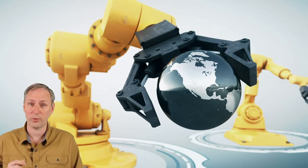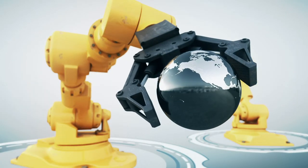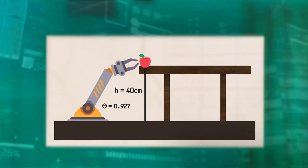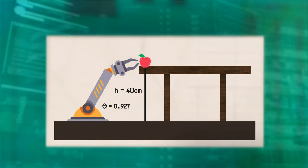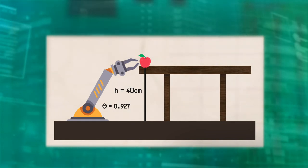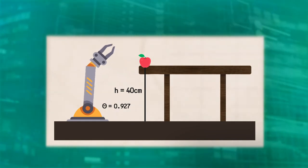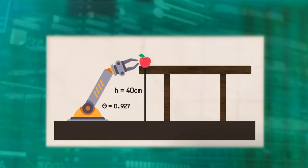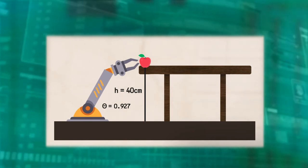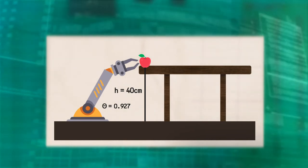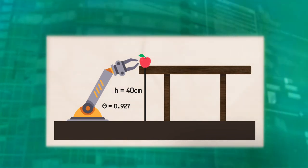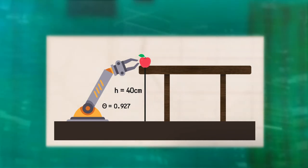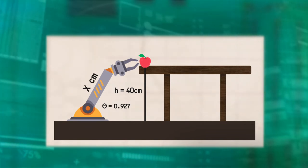Now let's take a look at a simple robot arm. The arm has one joint and a fixed length arm with the end effector, or hand, at the tip. Since it only has one joint, the arm can place the end effector anywhere on a circle. If we know the object is 40 centimeters high, and we know that the arm is at an angle of 0.927 radians, which is about 53 degrees, how long does the arm have to be in order to reach the table?